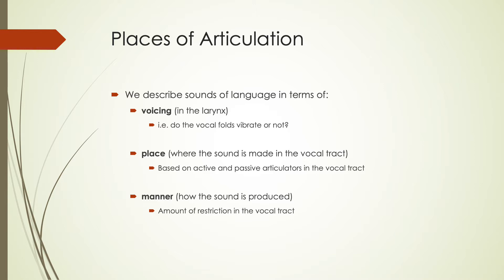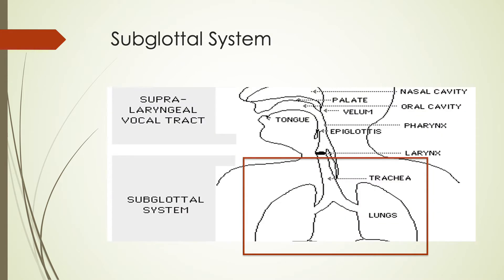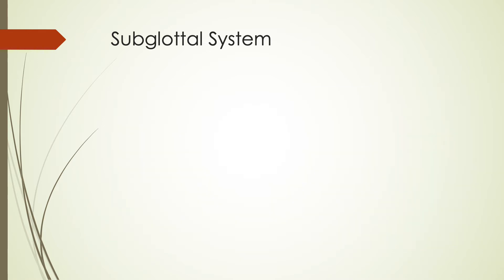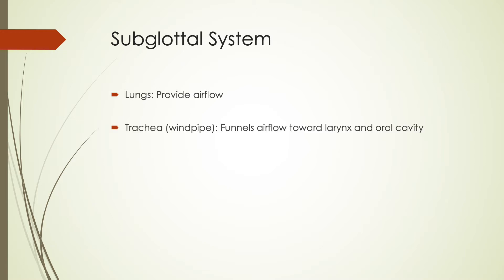Starting with our subglottal system — the area below your larynx — this involves your lungs and your trachea or windpipe. Our subglottal system containing our lungs gives us the airflow we need to produce sounds. We need our trachea to funnel that airflow towards our larynx and into our oral cavity, where most of our differences in sounds are made. We actually have a few sounds in English made entirely within the subglottal system.